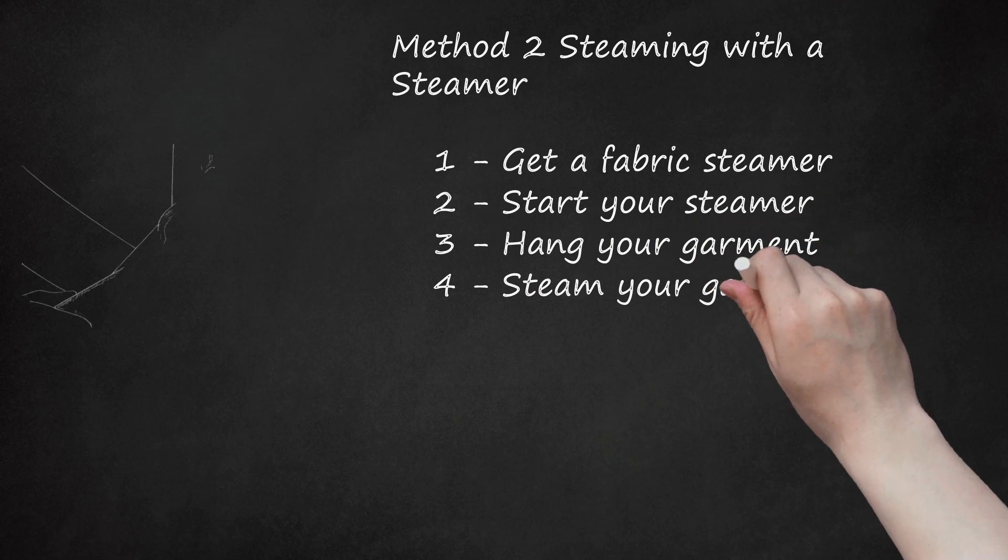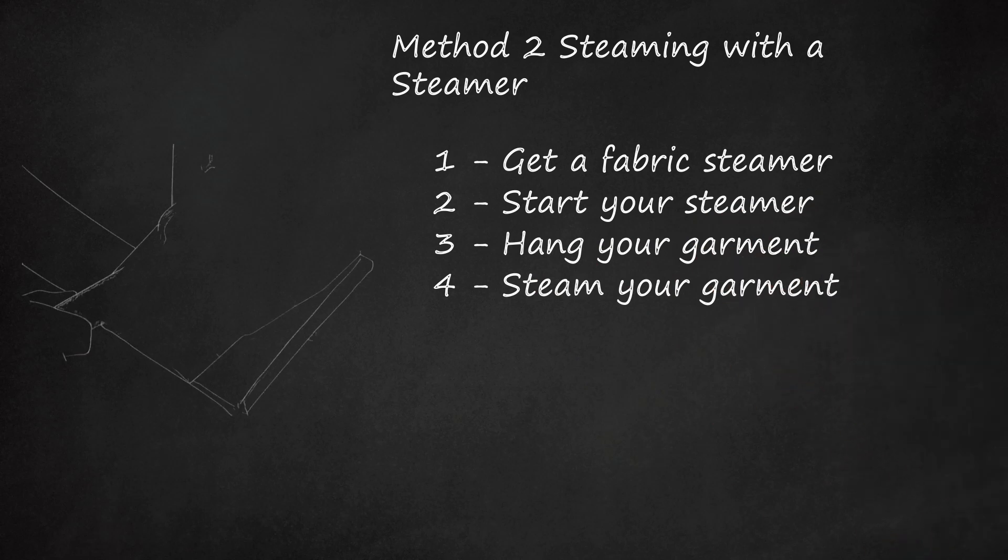Step 4: Steam Your Garment. Use the steamer to apply an even coat of steam over the wrinkled parts of your leather. If possible, get both the inside and the outside of the wrinkled areas. Be sure to hold the steamer four or so inches from the garment and only apply steam for a second or so at a time, moving over the garment in same fashion that you would with an iron.